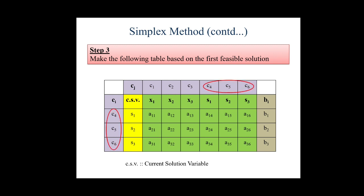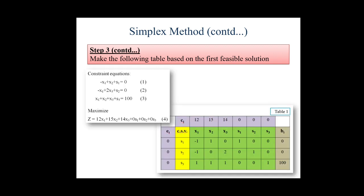And the bi column is representing the right-hand side constants of the constraint equation. So the coefficients we have mentioned for s1, s2, s3 in the cj row, the same coefficients we will mention in the ei column. So now there is a comparison. I have shown the equations also and the table also. The cj column has all coefficients of our objective function.